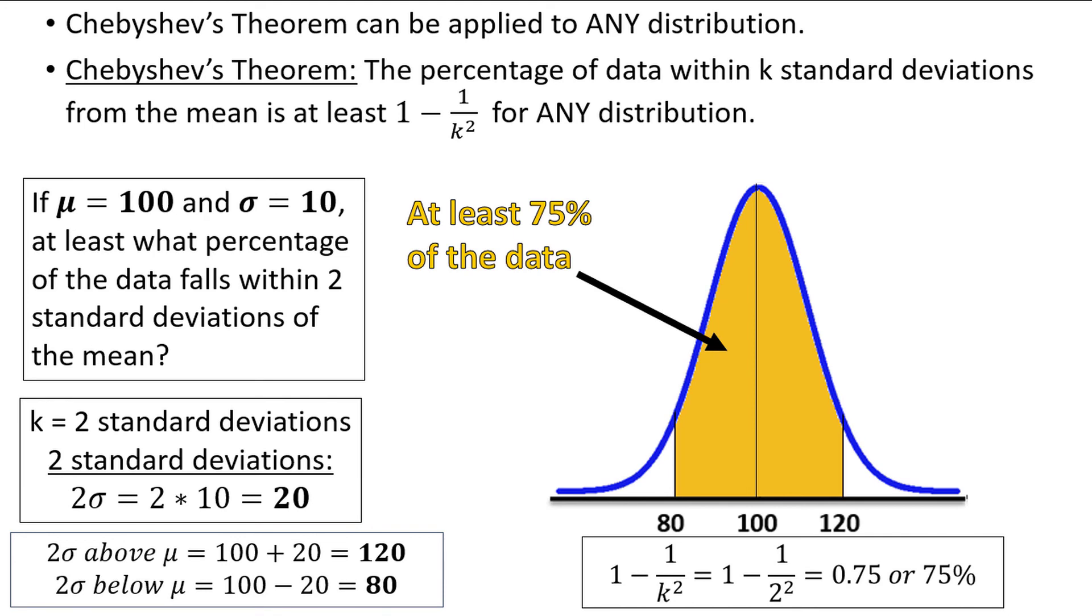We say at least because Chebyshev's theorem is not all that precise, as it needs to work for any distribution. Many distributions will have more than 75% of the data within two standard deviations of the mean, but the number must be, at a minimum, 75%.